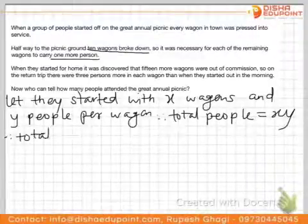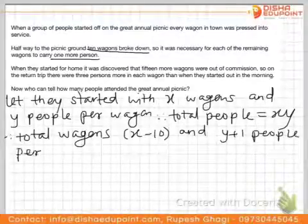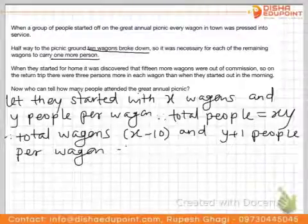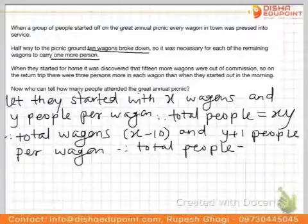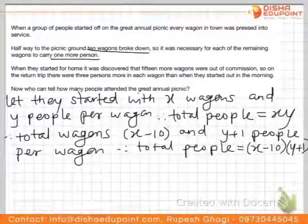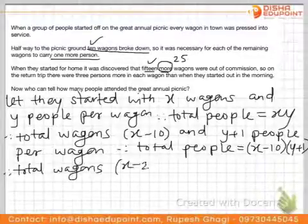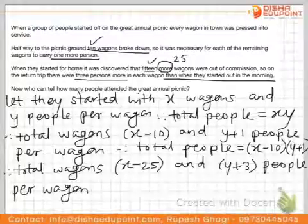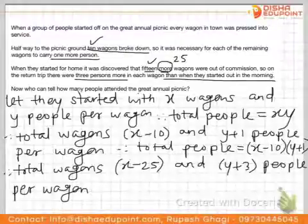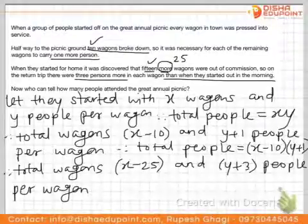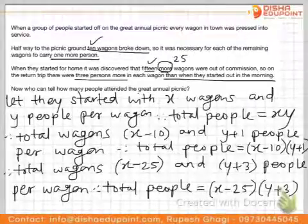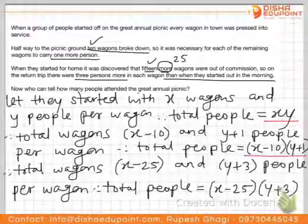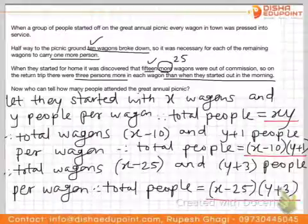Now 10 wagons broke down going to the picnic, so total wagons became x minus 10. Each wagon then carried y plus 1 people, giving x minus 10 into y plus 1 total people. On the return trip, 15 more wagons broke down — 25 total from the start — leaving x minus 25 wagons. With 3 more people per wagon than in the morning, each wagon carried y plus 3, giving x minus 25 into y plus 3. Since total people is constant: x·y = (x−10)·(y+1) = (x−25)·(y+3).